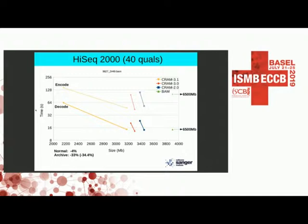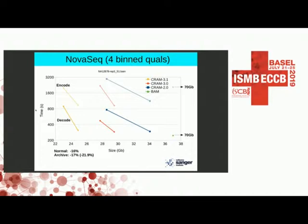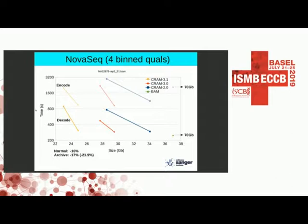On NovaSeq data, CRAM 3.1 normal mode is already 16% smaller than CRAM 3.0 normal mode, entirely due to bit-packing and run-length encoding. Using FQZ-COMP achieves about 22% smaller than the current normal mode, or 17% smaller than the previous archive. BAM is at 70GB — literally three times larger than the CRAM file. Analysis shows that one day of AWS storage savings from converting BAM to CRAM offsets the entire CPU cost of the conversion.